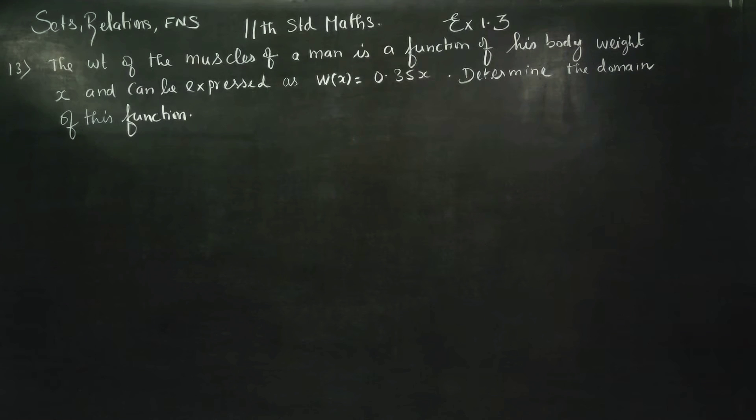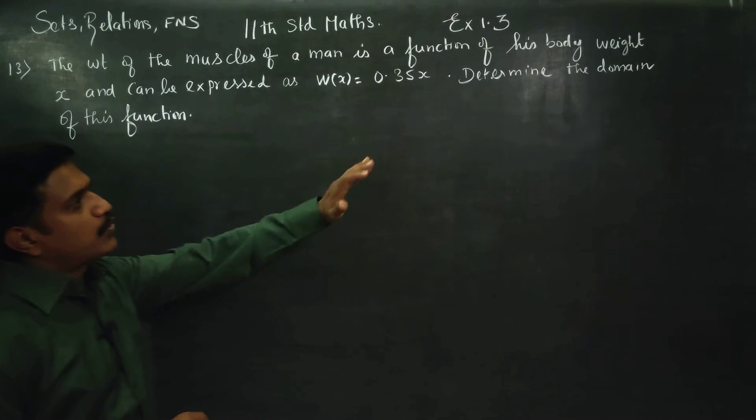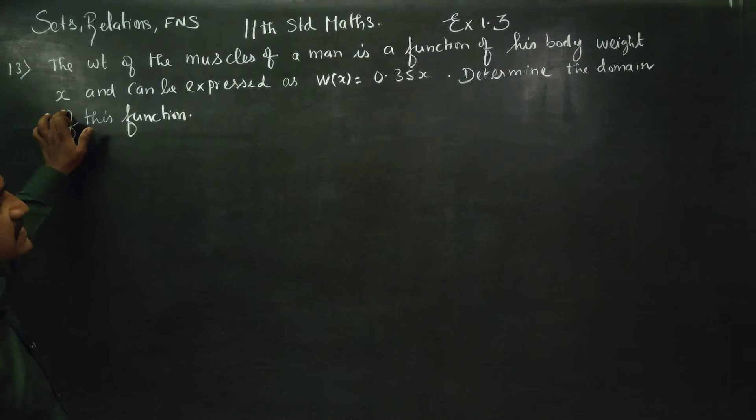In exercise number 1.3, sets of relations and functions, sum number 13, the weight of muscles of a man is a function of his body weight x, and can be expressed as w(x) is equal to 0.35x. Determine the domain of this function.